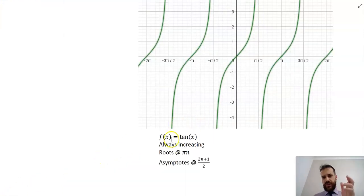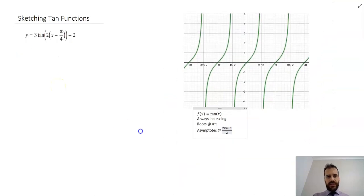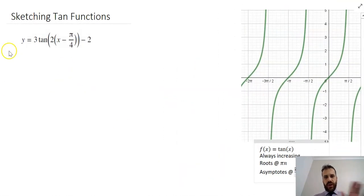Let's note about f(x) = tan(x). It's always increasing. The roots are at πn, so 0, π, 2π, 3π, 4π, and the asymptotes are at (2n+1)π/2. We've got to put a π in there, (2n+1)π/2. So that's what we know about tan(x). Now we can start sketching something way more complicated just using what we know about function transformation.